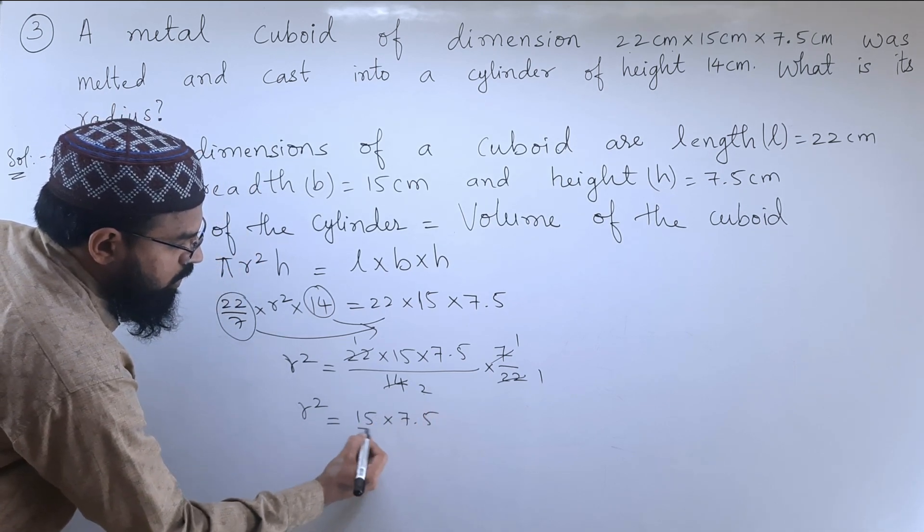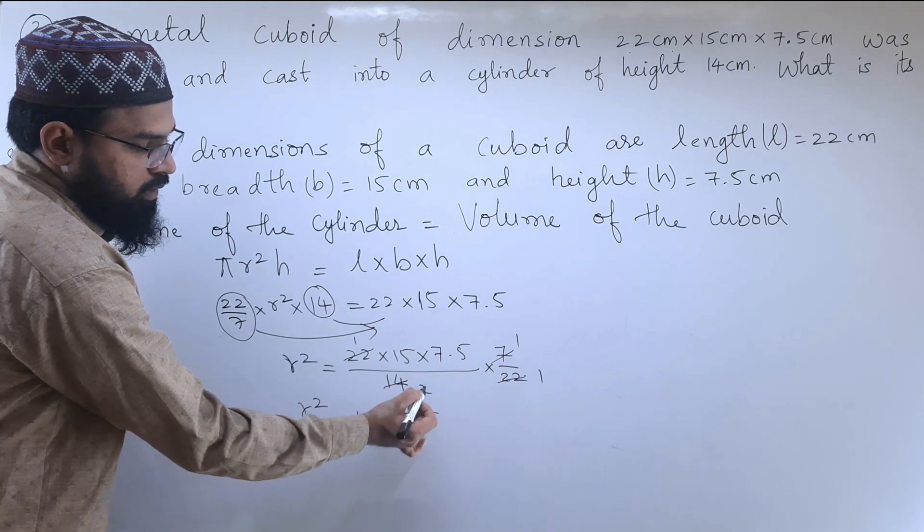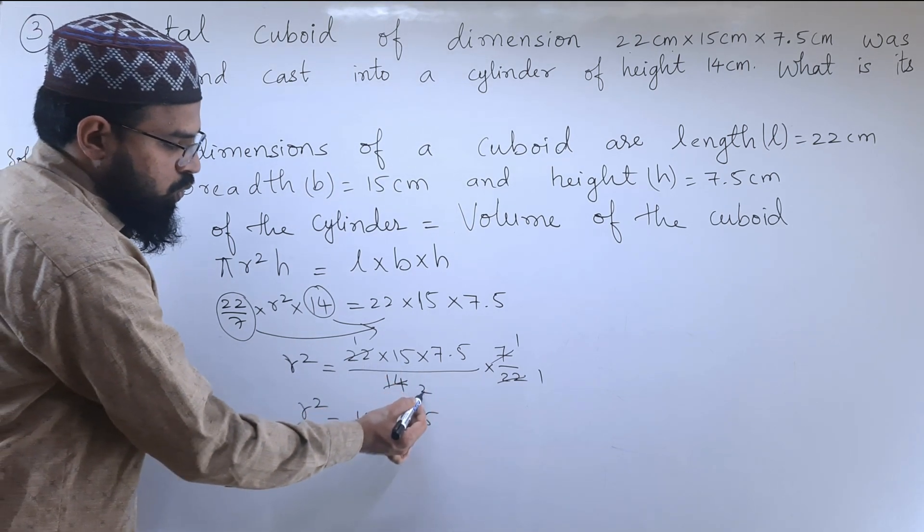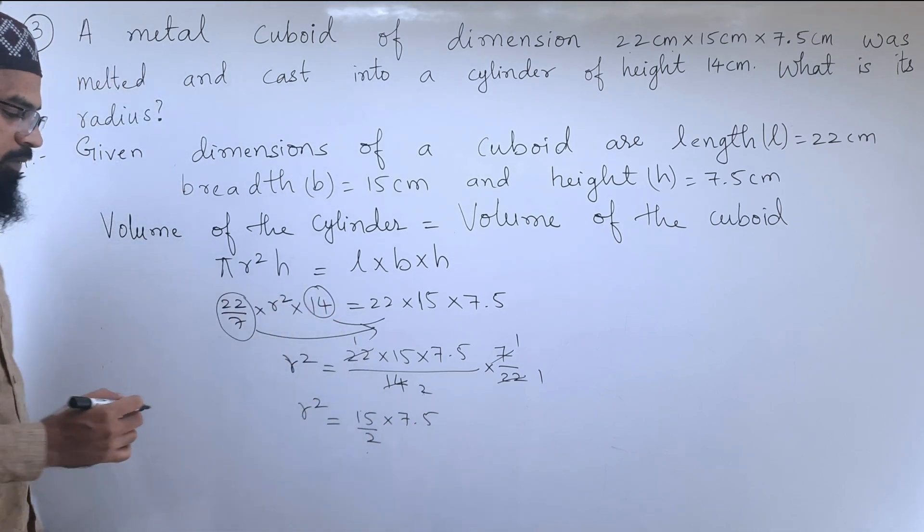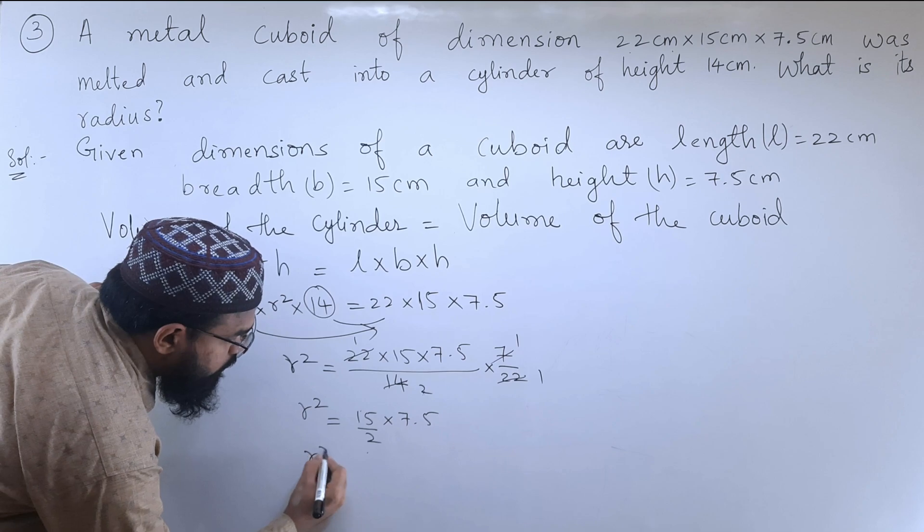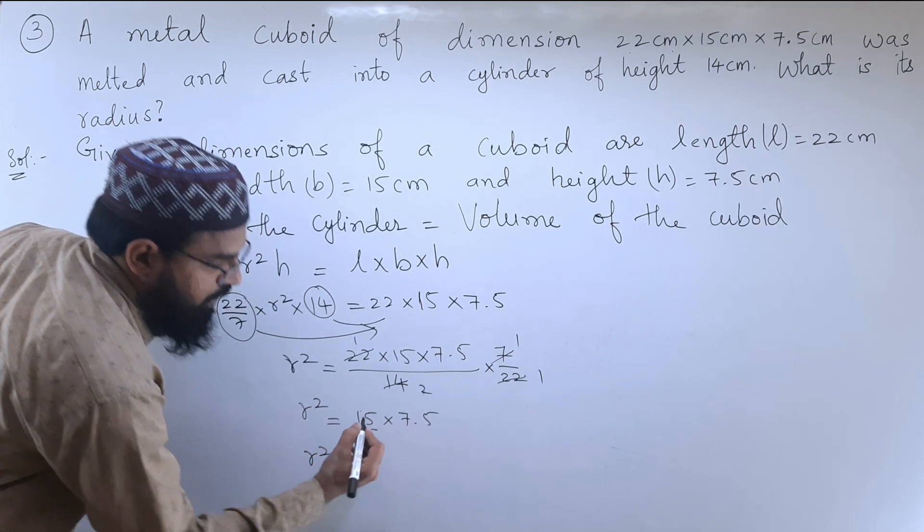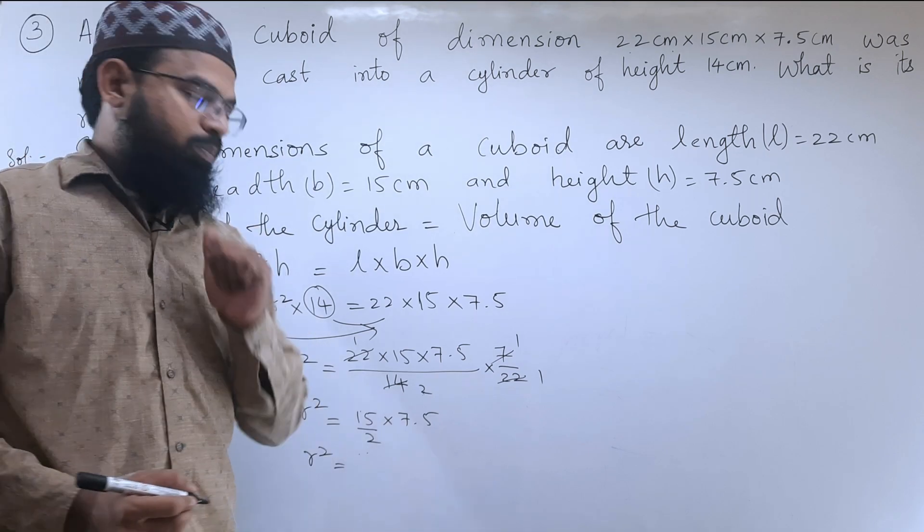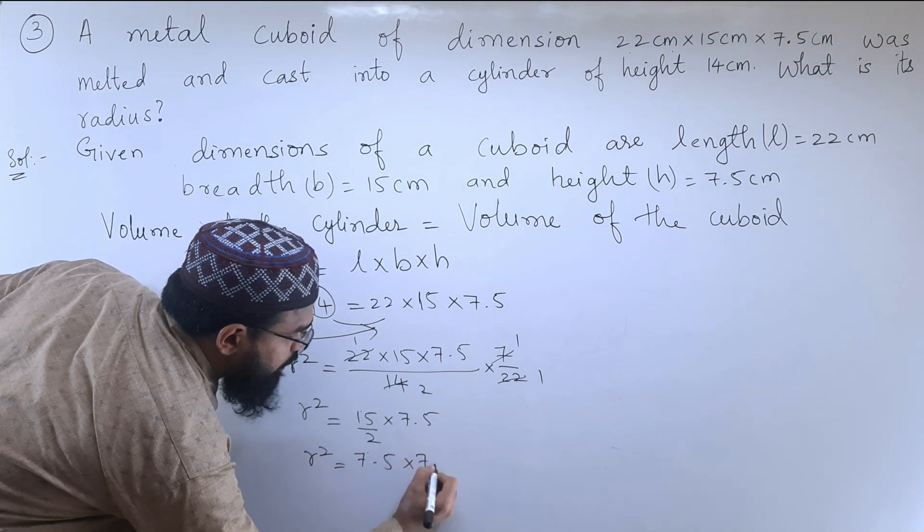We will write this 2 for 15, denominator 2 can be written 15 by 2. R² is equal to, half of 15 is 7.5, so 7.5 into 7.5.